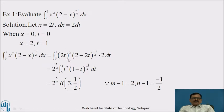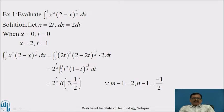Therefore, the given integral, integration from 0 to 2 of x squared into bracket 2 minus x raised to minus 1 by 2, dx becomes integration from 0 to 1. Putting x equal to 2t, we get 2t whole squared, and 2 minus 2t raised to minus 1 by 2, and the value of dx is 2 dt. Simplifying: 2 raised to 2 into 2 gives 2 raised to 3, and taking 2 common from the bracket gives 2 raised to minus 1 by 2, which simplifies to 2 raised to 5 by 2, integration from 0 to 1, of t squared into bracket 1 minus t raised to minus 1 by 2, dt.